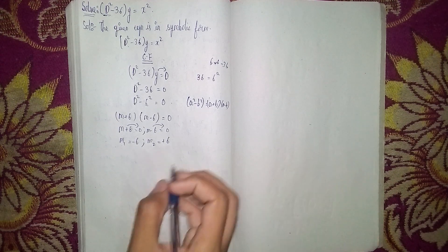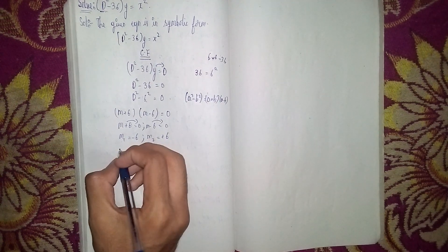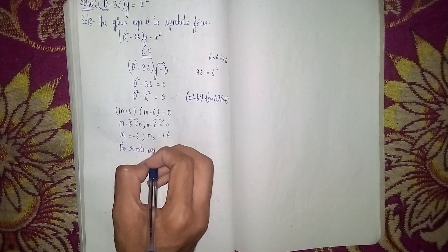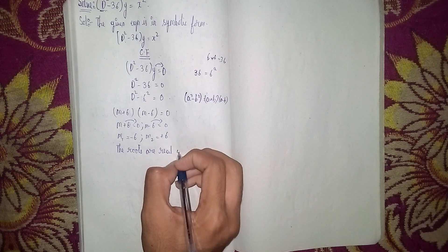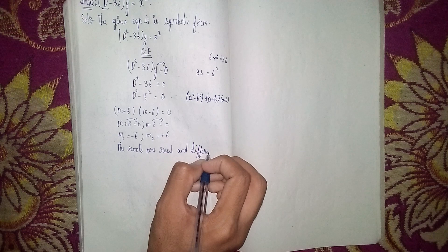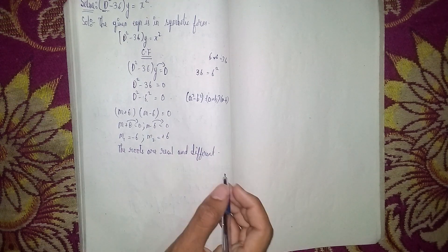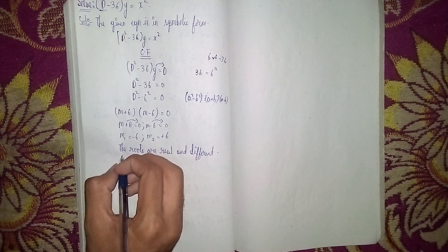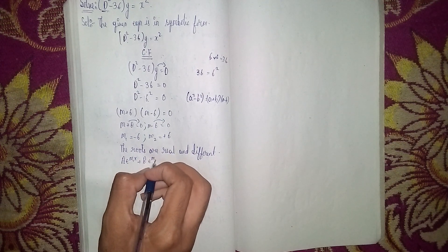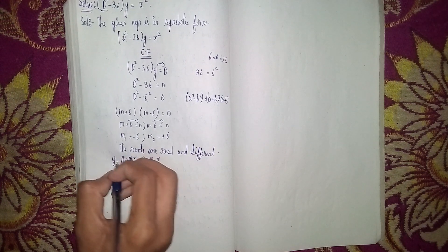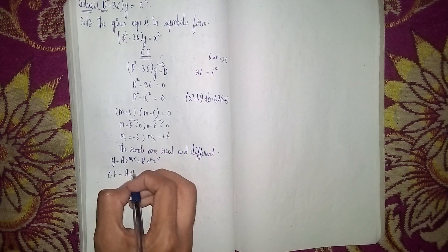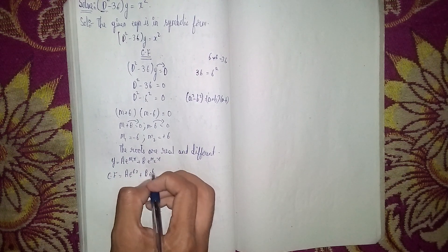The roots are real and different because the signs are different. For real and different roots, the complementary function is Y = A·e^(M1·x) + B·e^(M2·x). So our complementary function is: CF = A·e^(-6x) + B·e^(6x).